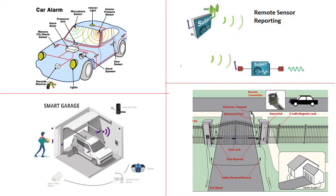There are three applications: wireless security systems, car alarm systems, and wireless smart garage systems. This is a gate opening system — when we have cars, the gate opens. There are remote sensor reporting centers and security analysis systems.